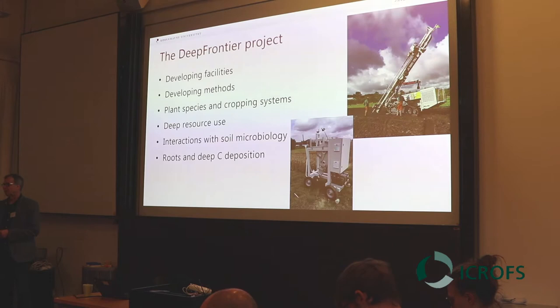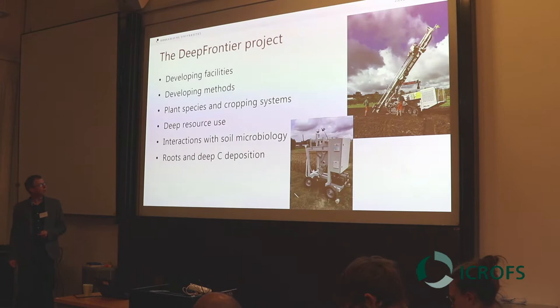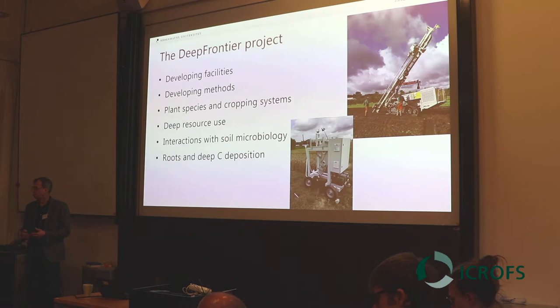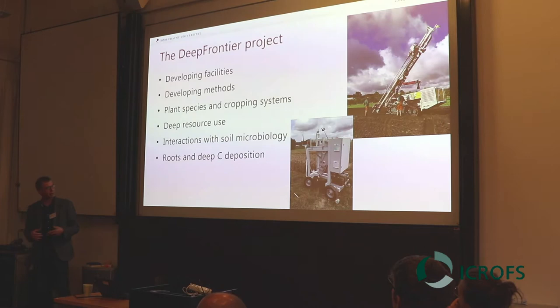We have been looking at plant species, because one of the main variables is the root depth of plant species. Even within common crops there is a lot of difference, and if we try to look wider with biennial crops and so on, we can find crops that can go much deeper. Not only looking at the crops and cropping systems, but also at what they are actually using down there — and we know that when growing in soil, plant roots have friends and enemies: diseases, nematodes attacking the roots, but also microbes helping the roots.